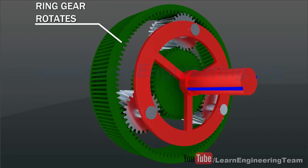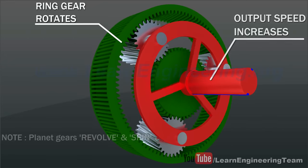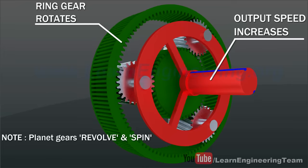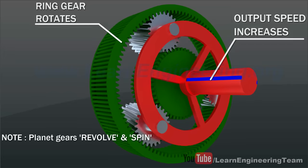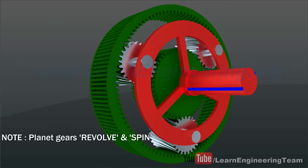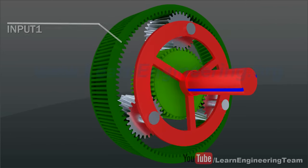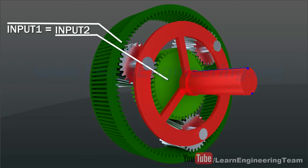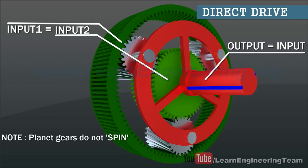The ring gear is also rotating. The ring and sun gears rotate at the same speed. In this case, the whole mechanism moves as a single unit.